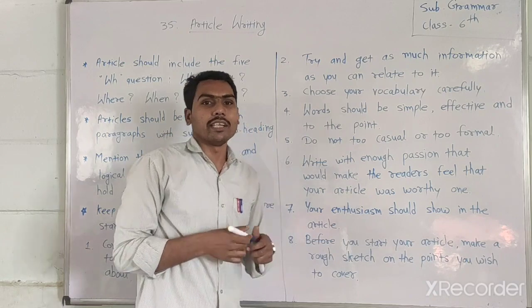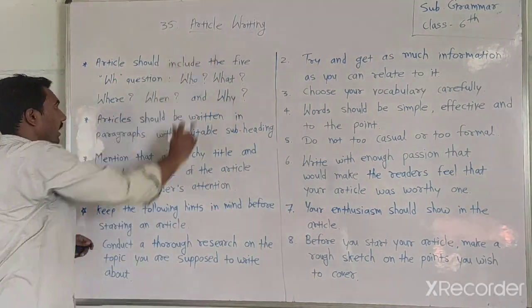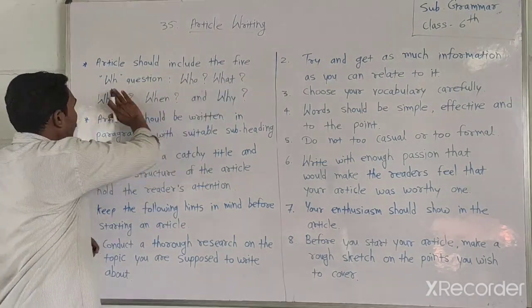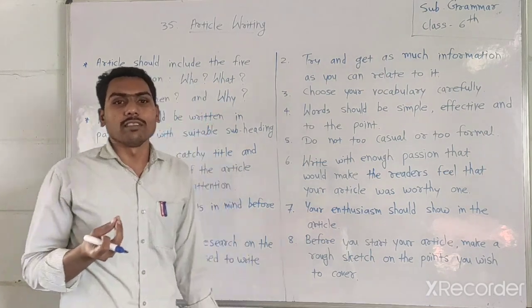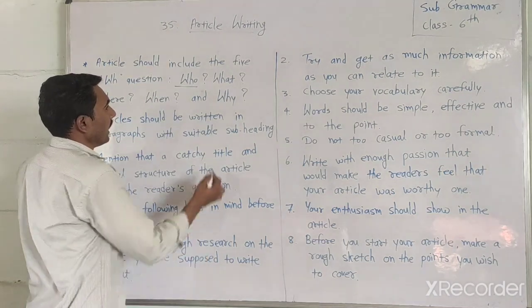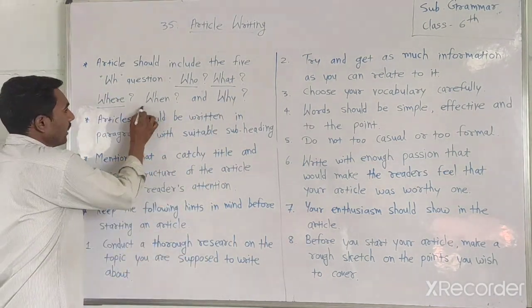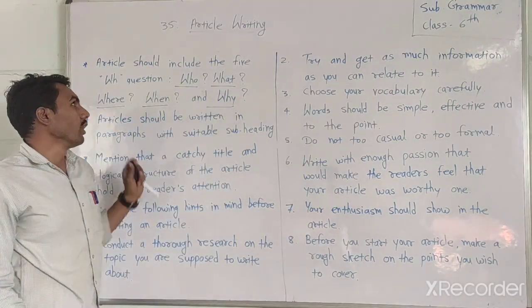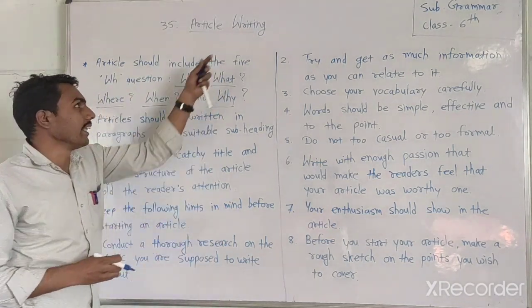An article should include the 5 WH questions. These WH questions — who, what, how, where, and why — give the answers within that article.